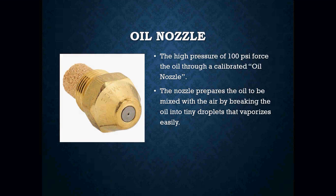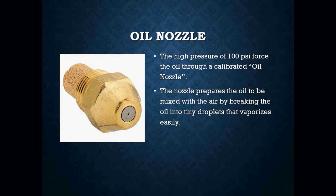You will have your oil nozzles. The high pressure of 100 psi forces the oil through a calibrated oil nozzle. The nozzle prepares the oil to be mixed with air by breaking the oil into tiny droplets that vaporize easily. Oil needs to be atomized in order for it to burn. By shooting oil through a small calibrated hole, we make the oil vaporize, so when I add a spark from my electrodes, I am able to burn the oil. It also meters the oil in the correct amount, and as the oil leaves the nozzle, it is set into a swirling pattern to help it mix with the air.